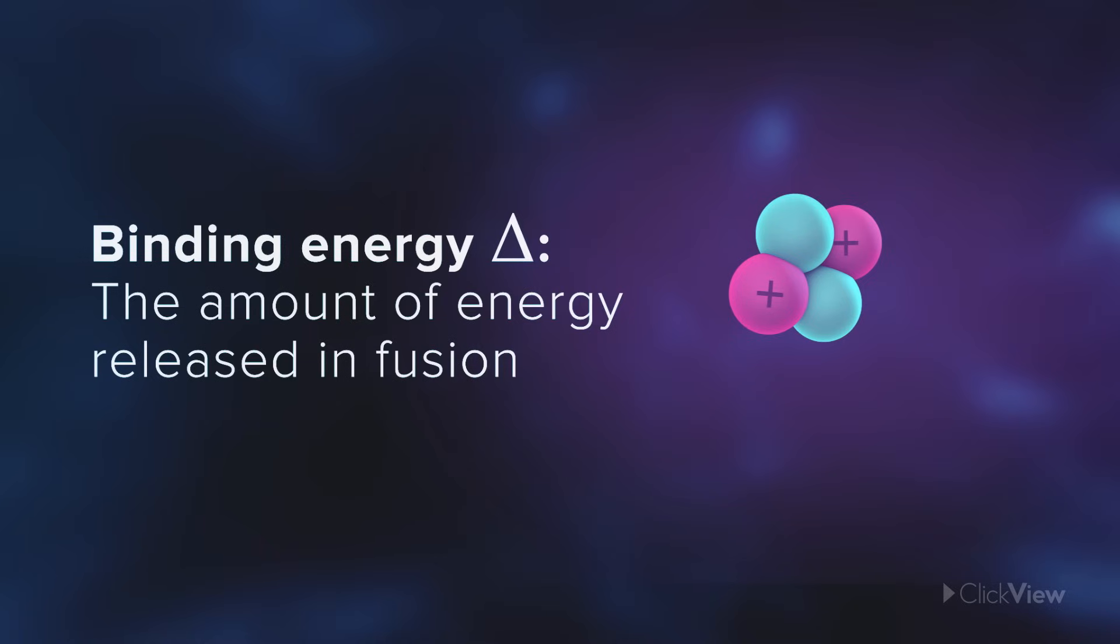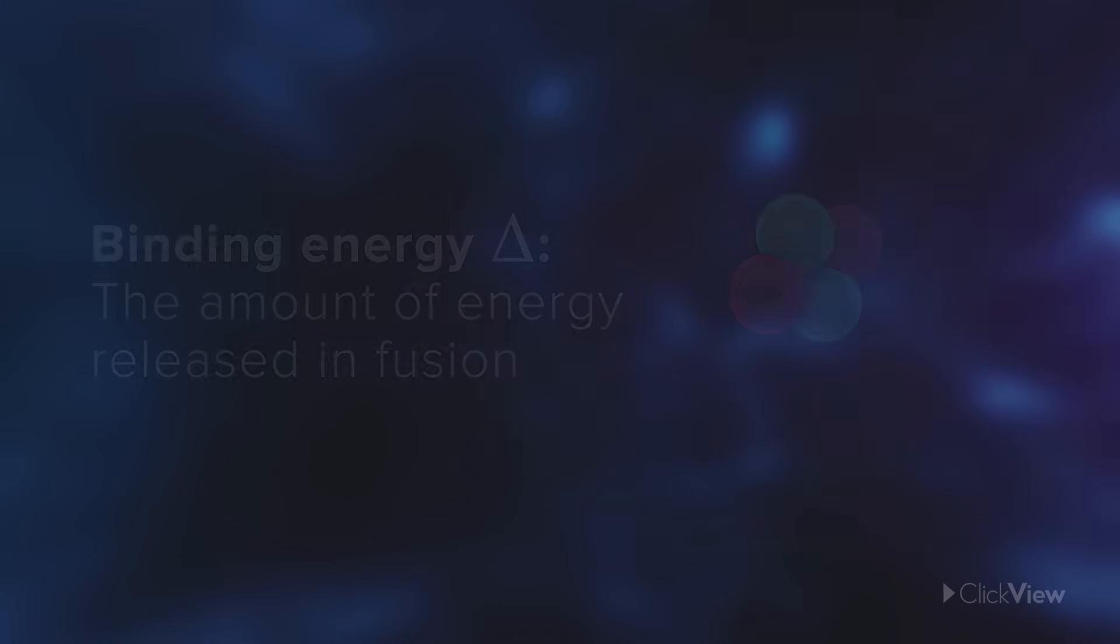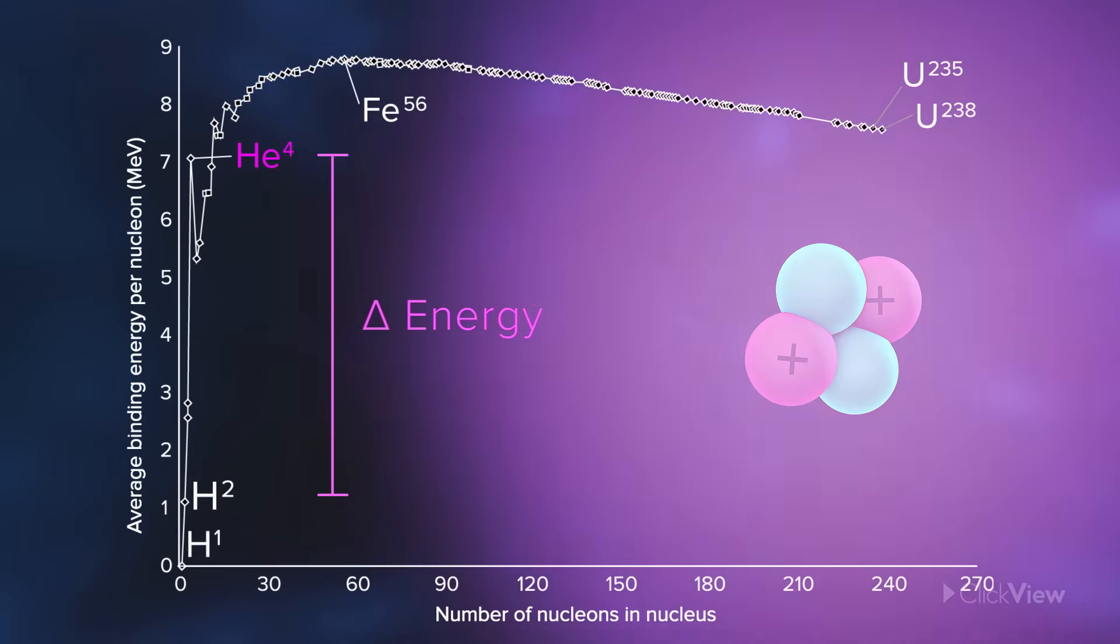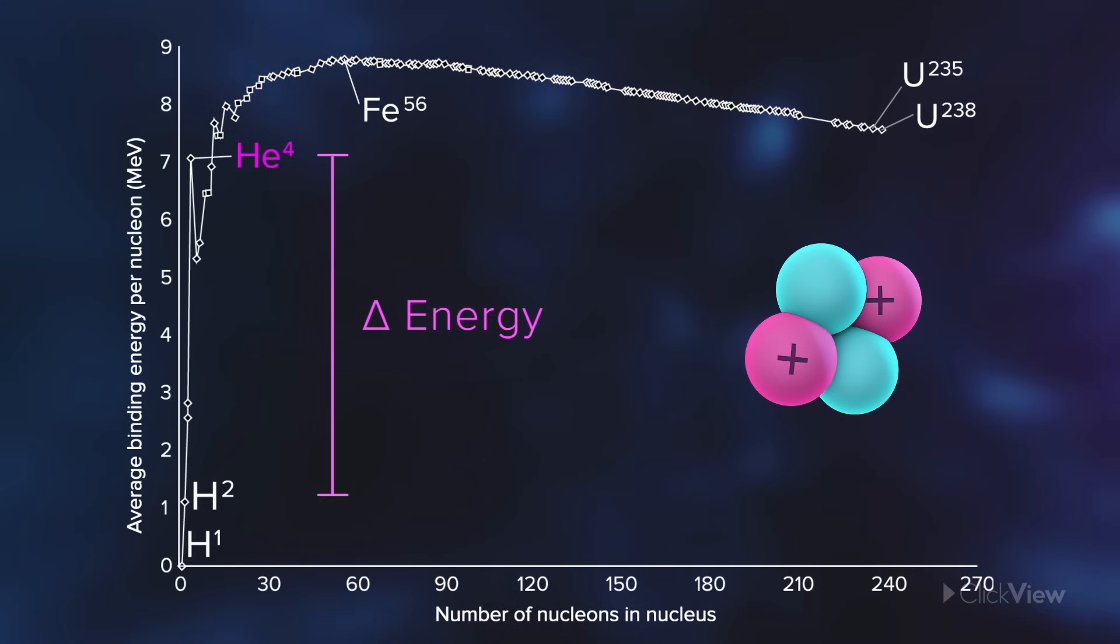Different elements have different amounts of binding energy, and we can compare them on a graph. A single proton on its own as a form of hydrogen has no binding energy. As the isotope deuterium, a proton and a neutron that underwent fusion would release a small amount of binding energy. Added to another deuterium nucleus to make helium, a much larger amount of energy would be released. As elements get heavier, differences in binding energy become smaller.